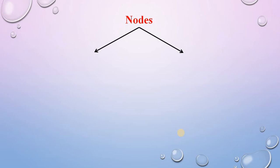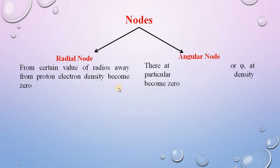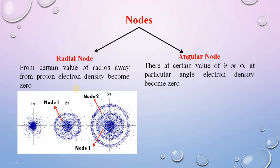A node is the region where the electron density becomes zero. There are two types of nodes in a hydrogen atomic orbital. The first type is the radial node: at certain values of the radius r away from the proton, the electron density becomes zero. The second type is the angular node: at certain values of theta or phi, at some particular angle, the electron density becomes zero.